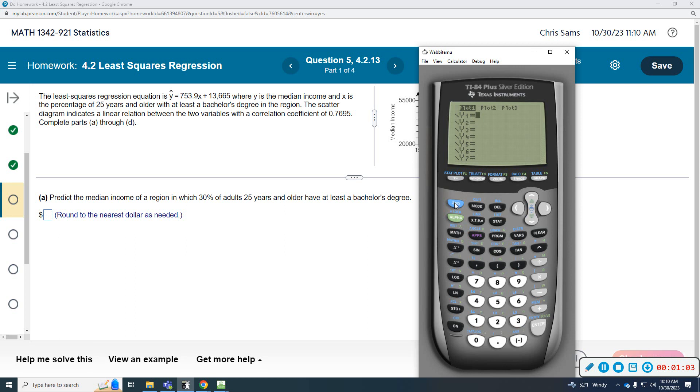I'm going to clear out, turn this off, and I'm going to type this equation here. So 753.9x plus 13,665. When I hit graph, I'm not going to see anything. My window is not correct. So what I'm going to do first is go zoom, and I'm going to go to 6 to put the standard window.